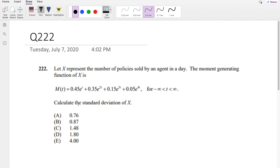They give you the moment generating function as this right here, and we're trying to look at the standard deviation. Well, as always, we know our standard deviation is just the square root of variance. And we know that our variance formula goes like this: it is the second moment minus the first moment squared.